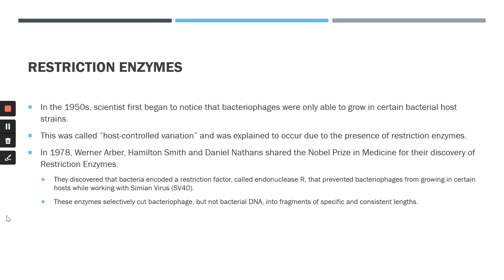These three scientists did pioneering work on restriction enzymes while working with a virus called SV40. They discovered that the bacteria SV40 tried to infect encoded a restriction factor, which they named endonuclease R. They found that bacterial hosts containing endonuclease R prevented bacteriophages from growing in them. They also found that endonuclease R specifically cut bacteriophage DNA but not bacterial DNA, and it cleaved the DNA into fragments of specific and consistent length each time.